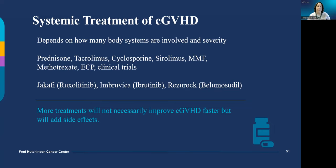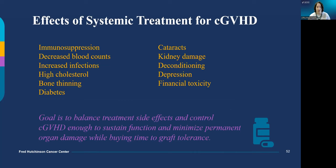When one treatment isn't working, adding more treatments doesn't necessarily improve graft-versus-host disease faster, but it does add more side effects. Unfortunately, more immune suppression brings more side effects, and the longer treatment is needed for chronic GVHD, the greater the late effects. The goal of chronic graft-versus-host disease therapy is to prevent permanent organ damage leading to loss of function, while minimizing treatment side effects, as we wait for graft tolerance to develop — meaning your donor's immune system is finally recognized as home and no longer causing graft-versus-host disease activity.